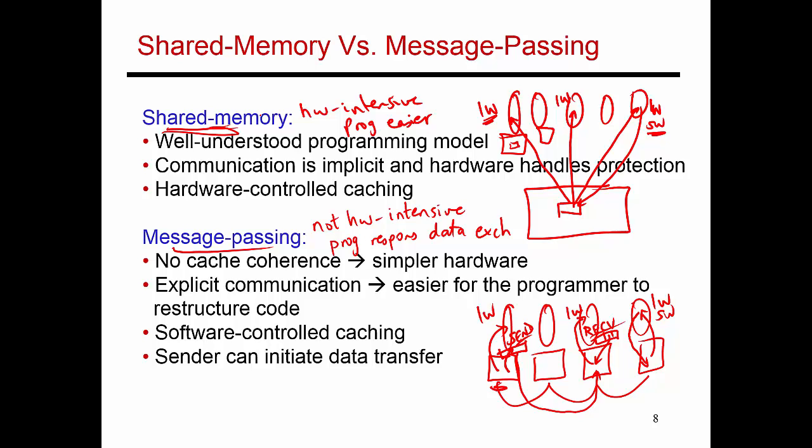Whereas with shared memory, in some sense, the hardware kind of pulls a value towards itself when you issue a load. That turns out to be a little bit slower in many cases. There are also these invalidation messages that go out, even though a thread may not be interested in that value anymore. With message passing, you can get slightly higher performance if you're willing to invest the effort.